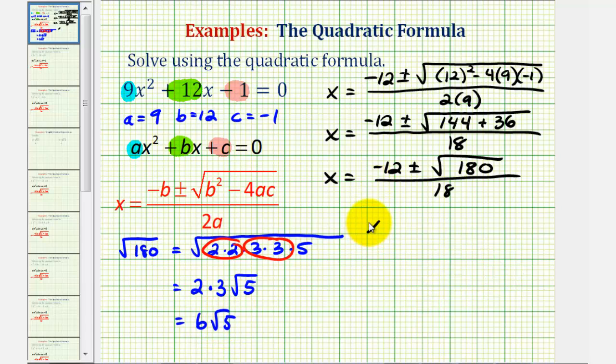So now we have x equals negative twelve, plus or minus six square root of five, divided by eighteen.